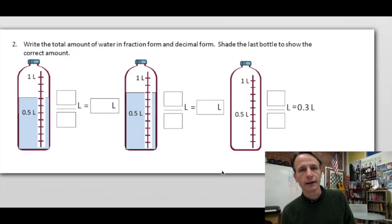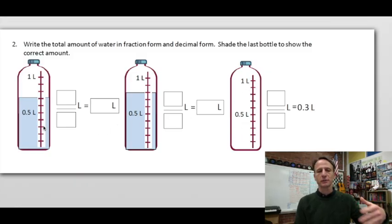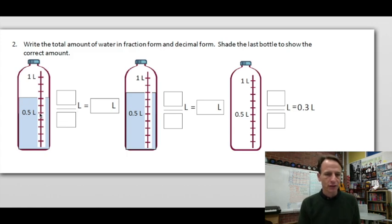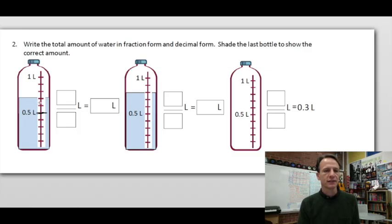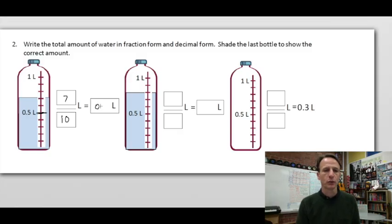Moving on — write the total amount of water in fraction form and decimal form. We have slightly different structures here; for the last bottle we do the shading ourselves. For the first two: look where the water level is — there's five tenths liter marked, and the water is at seven tenths liter. Seven tenths as a fraction is 7/10, and as a decimal is 0.7. The next bottle's water level is at eight tenths.